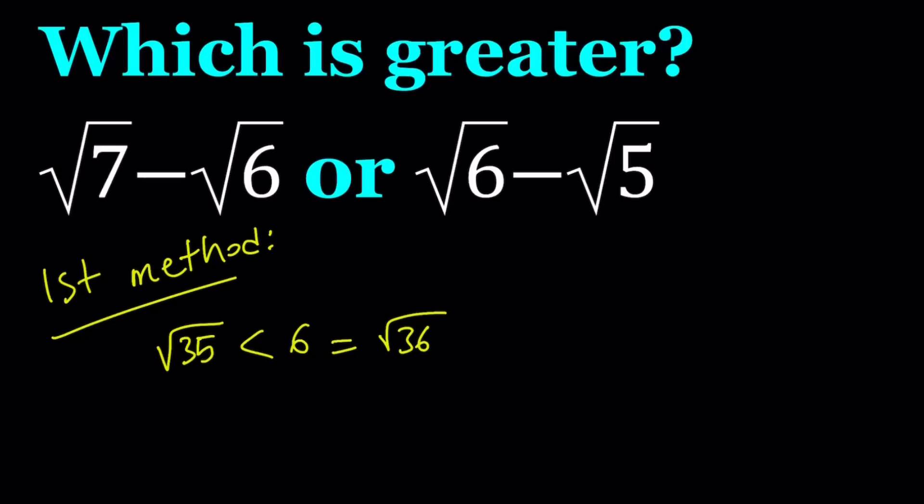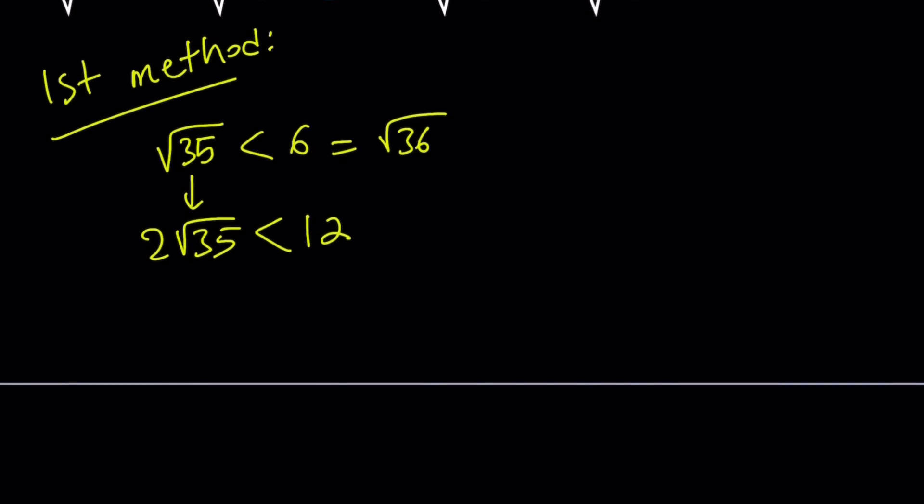Now let's go ahead and multiply both sides by 2. So that's going to give us 2 times the square root of 35 is less than 6 times 2, which is 12. And then I'm going to add 12 to both sides, and you'll see in a little bit why that's the case. 12 plus 2 root 35 is less than 12 plus 12, which is 24.